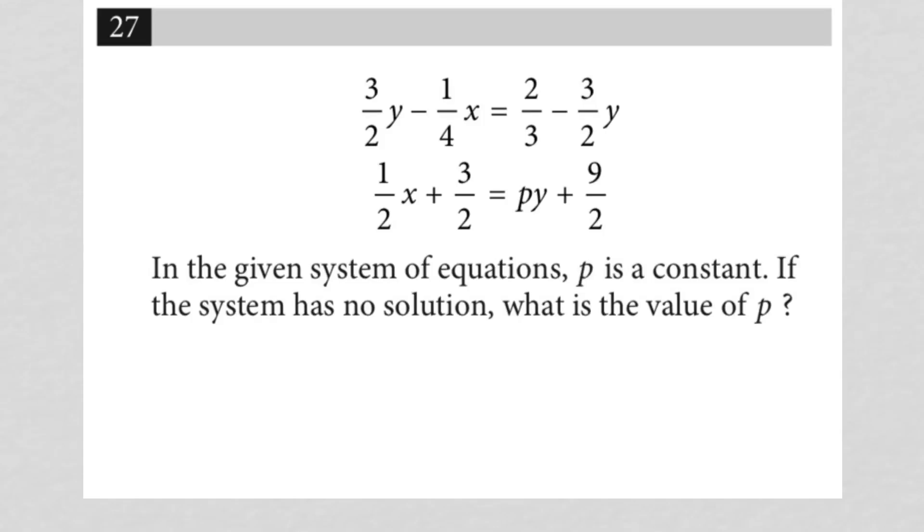So this question starts off by providing us with two equations. Basically we have a system of equations. It goes on to say in the given system of equations, P is a constant. If the system has no solution, what is the value of P?